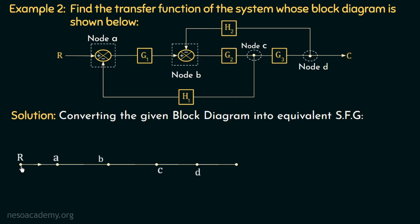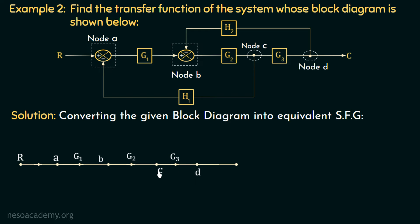The input node is R, from which the signal is going out. Now if you observe this block diagram, there is a block of gain G1 which is connected between node A and node B. So there will be a branch of gain G1 connected between node A and node B in this signal flow graph, because a block of gain G1 in block diagrams is a branch of gain G1 in the signal flow graph. Similarly, there is a block of gain G2 connected between node B and node C, so there will be a branch of gain G2 between node B and node C. A block of gain G3 is connected between node C and node D, and a branch of gain G3 will be connected between node C and node D.